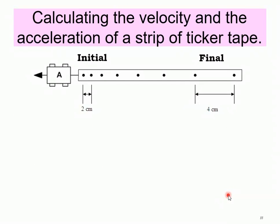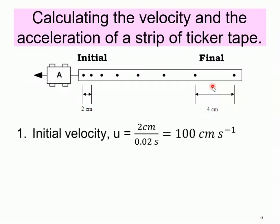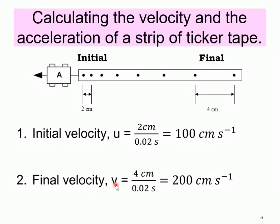Now let's calculate the velocity and acceleration of a strip on a ticker tape. First, identify the direction of the trolley motion. If it's going towards the left, then this part is the initial and the other is the final. The initial velocity u: take the distance which is 2 cm divided by 0.02 seconds — because this is the distance for one tick, the time taken for one tick is 0.02 seconds. Therefore the initial velocity is 2 cm divided by 0.02 seconds, giving 100 cm per second. Next, find the final velocity: v is 4 cm divided by 0.02 seconds, so we get 200 cm per second. Note: we do not need to change the velocity to m per second because ticker tape normally uses the measurement cm.